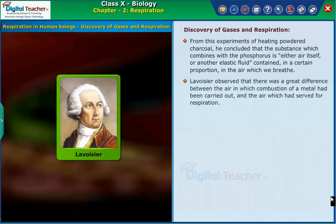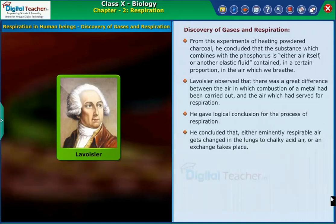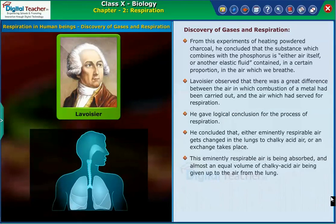Lavoisier observed that there was a great difference between the air in which combustion of a metal had been carried out and the air which had served for respiration. He gave a logical conclusion for the process of respiration. He concluded that either eminently respirable air gets changed in the lungs to chalky acid air, or an exchange takes place — the eminently respirable air being absorbed and almost an equal volume of chalky acid air being given up to the air from the lungs.